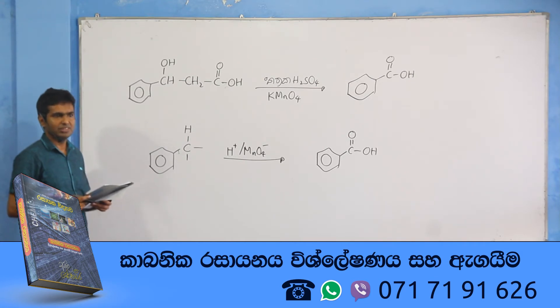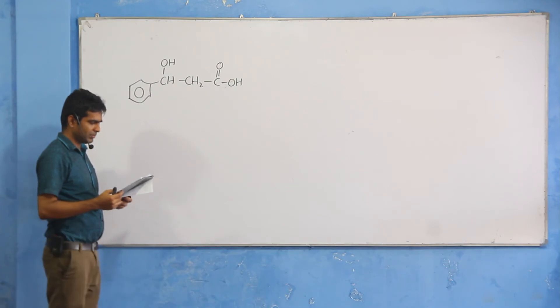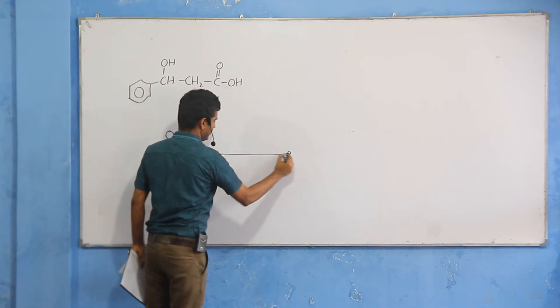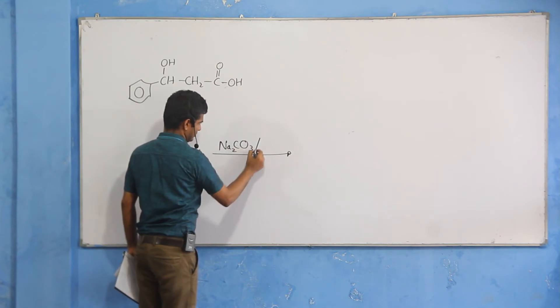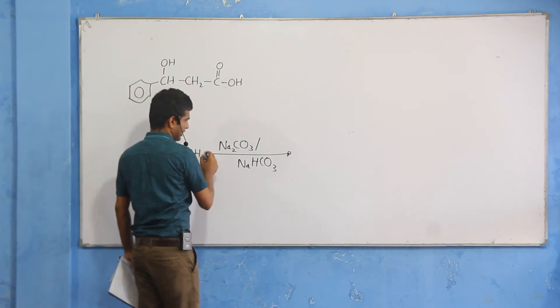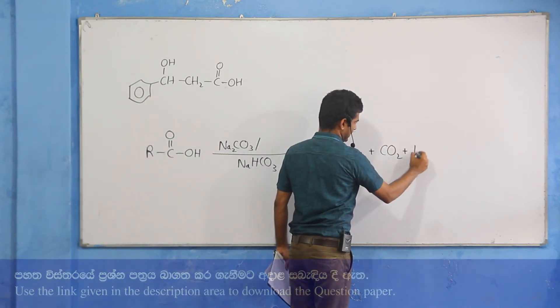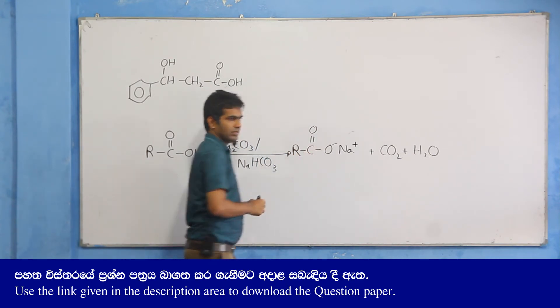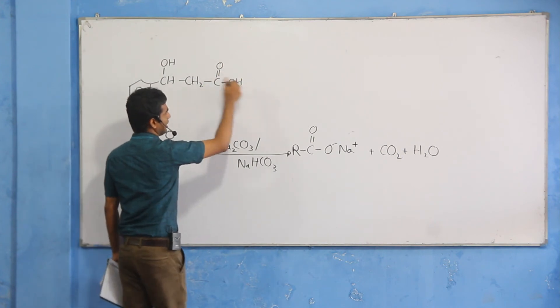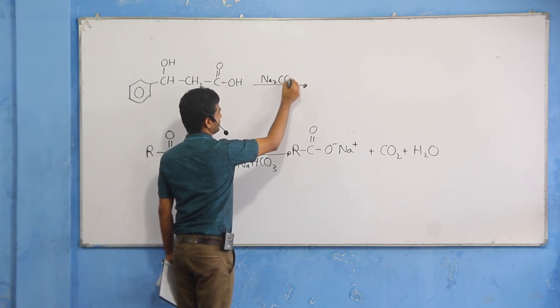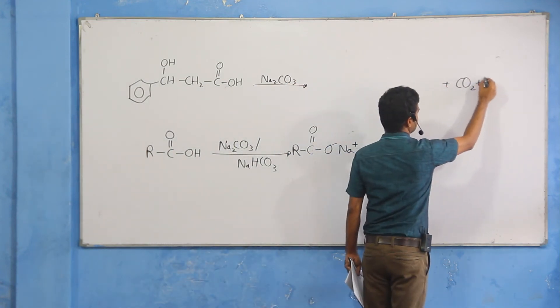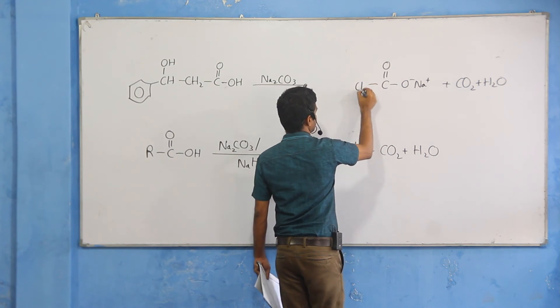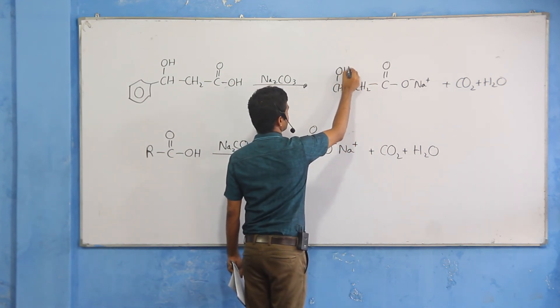First, you react with sodium carbonate. That is the characteristic of carboxylic acids - reacting with sodium carbonate or sodium bicarbonate produces carbon dioxide and water. Because carboxylic acids are acidic, they form sodium carboxylate. Carbon dioxide and water are produced - that's the characteristic of carboxylic acids.